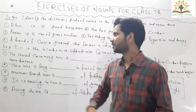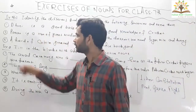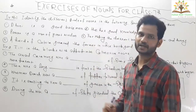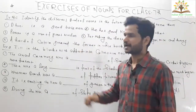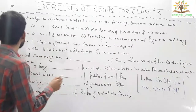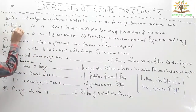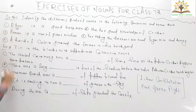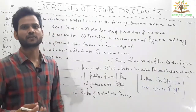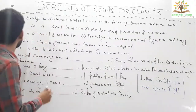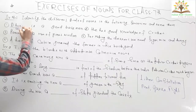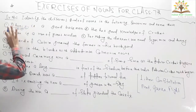Now I am going to explain: 'Dhoni is a good batsman.' It is very simple — Dhoni is a proper noun. Why? Because we are talking about the particular name of a person. When we talk about particular names of persons, things, or animals, it is called a proper noun. So here, Dhoni is a proper noun.